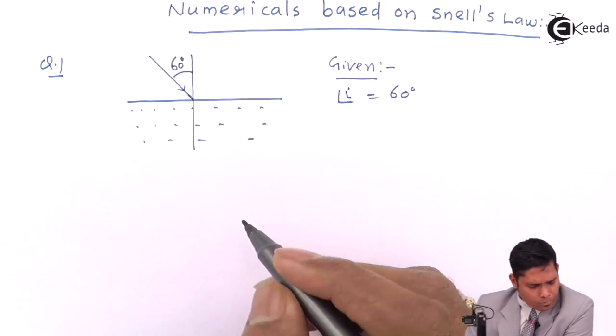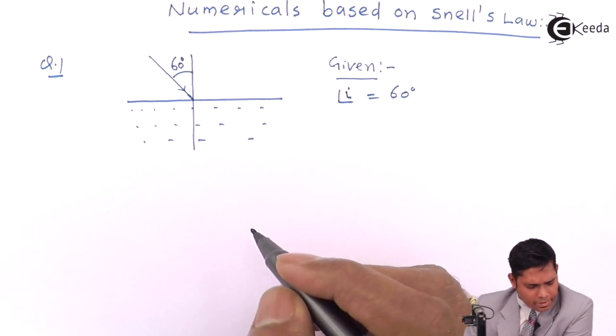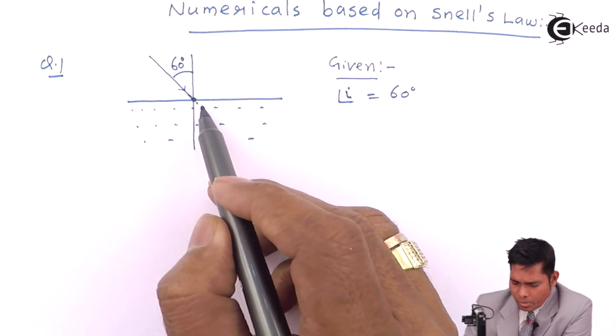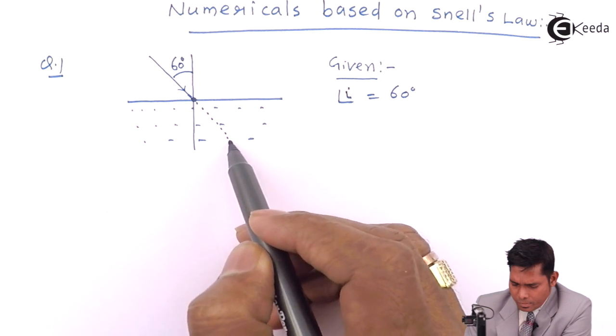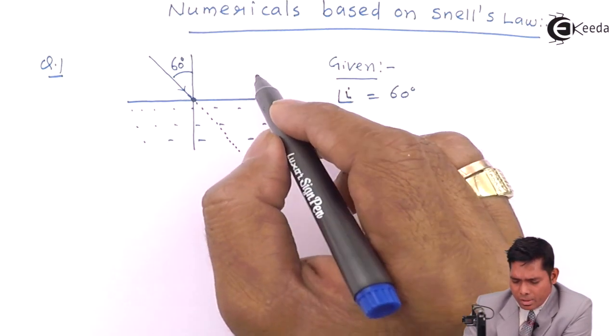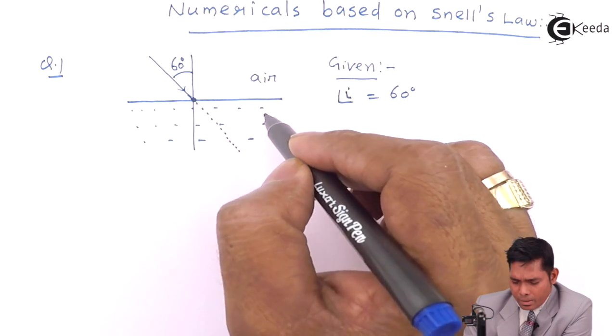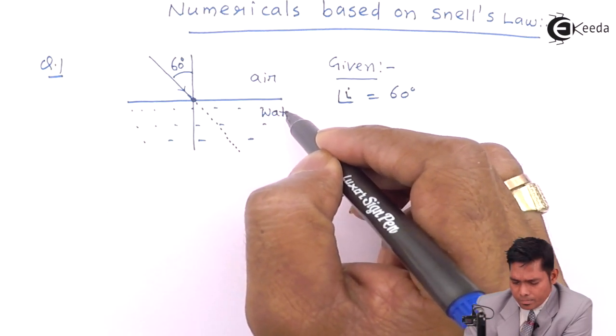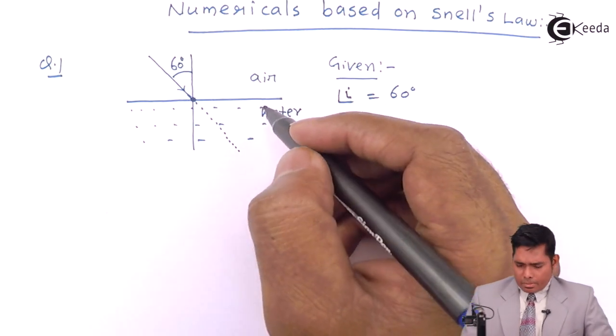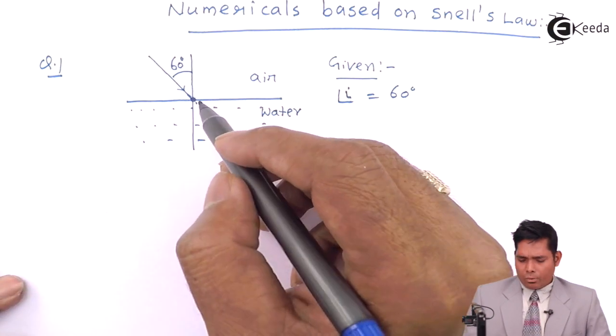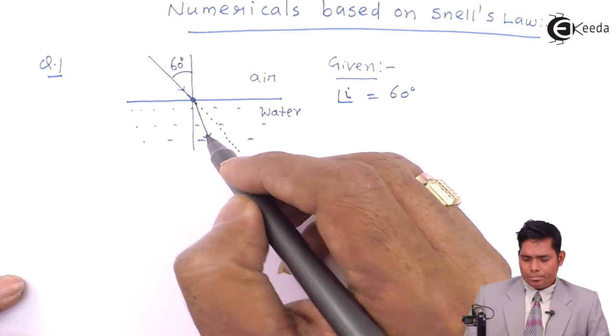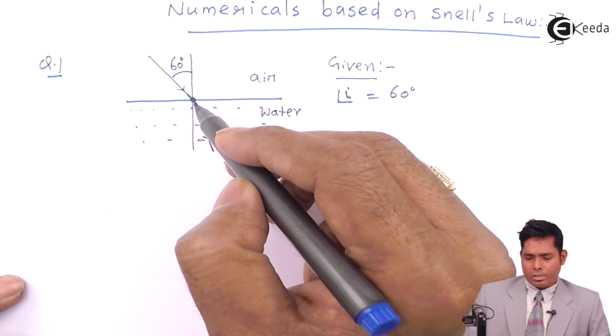The ray is deviated through 15 degrees towards the normal when it enters the water. That means it should have gone straight like this, but instead of going straight, it will bend because this part is air and this part is water. When light enters from air to water, from rarer medium to denser medium, it will bend towards the normal. So therefore it will bend towards the normal, something like this. This is the incident ray, this is the refracted ray.